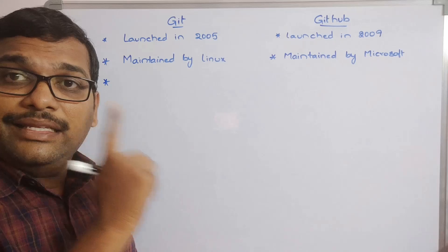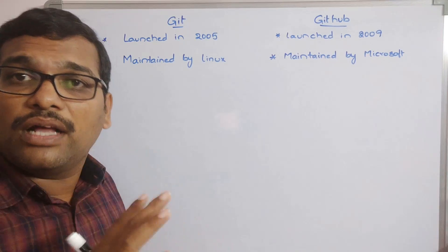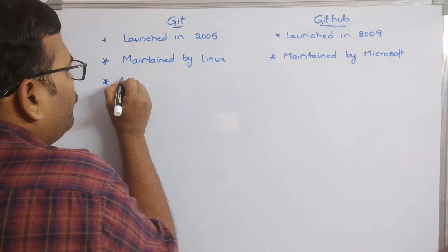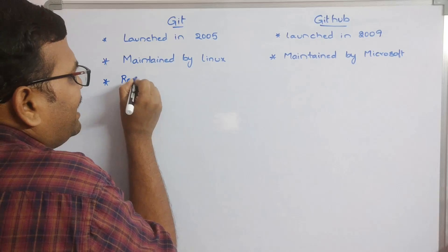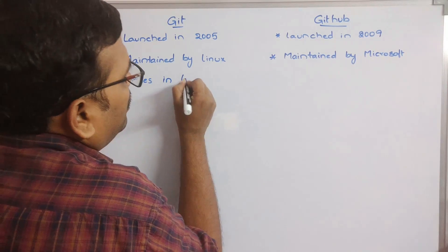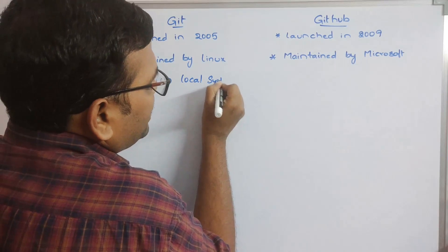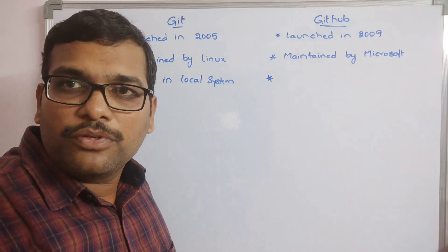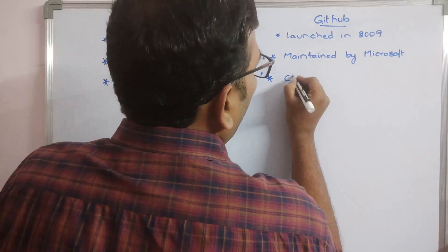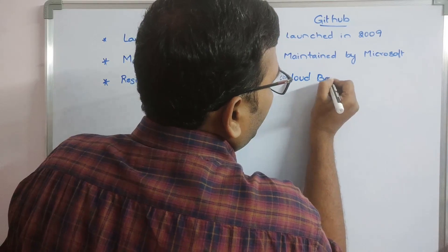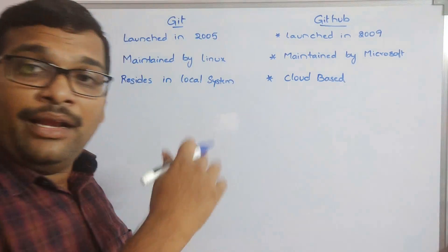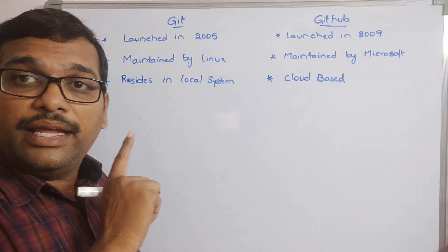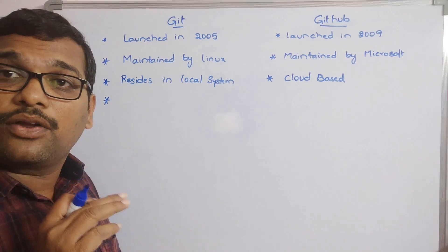Git resides in our local system — it is a software that resides in our own local system. GitHub resides on the web, so it is called cloud-based.